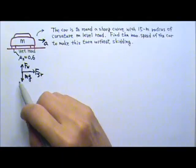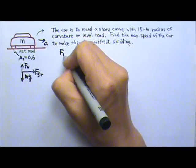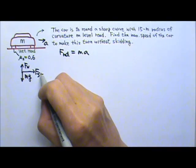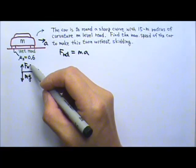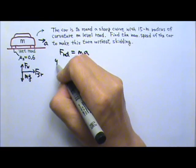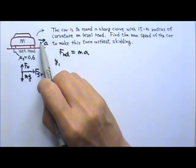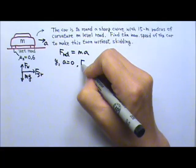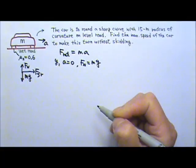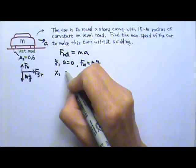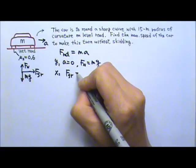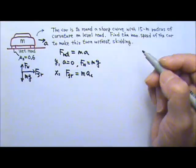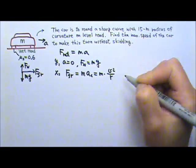The car is not touching anything else, so we're done with the force diagram. Let's write the net force equals Ma. We need the friction, so we'll need the normal force. In the y-direction, there is no y-component of acceleration, so the upward force equals the downward force: the normal force equals Mg. In the x-direction, friction is the net force, which equals Ma. The acceleration in the x-direction is the centripetal acceleration, v squared over R.